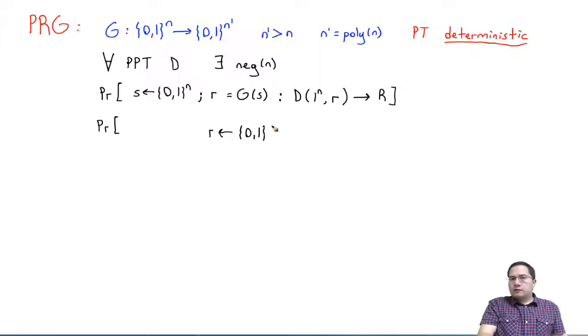Now, if I pick it with a different length, it's very easy to distinguish. So I will pick it of the same length as the output of G. So I will pick an N-prime bit random value R. I will again give this to the distinguisher, together with the security parameter.